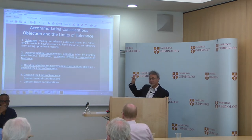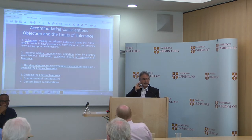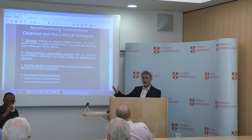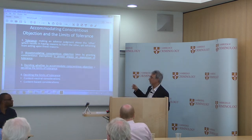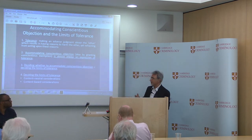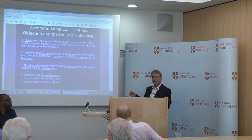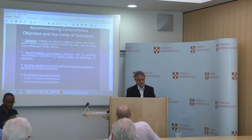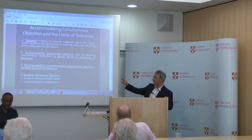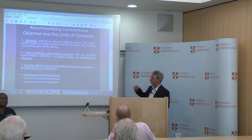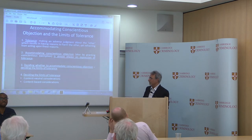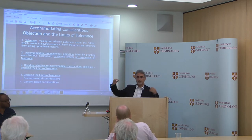But if the law does take a moral stand, then exempting objectors from the law is always an expression of tolerance, which means that when we decide whether to accommodate conscientious objection or to exempt conscientious objectors, we always make a decision about the limits of tolerance. And when we decide the limits of tolerance, we can take into consideration two types of considerations: content-neutral considerations or content-based considerations. Content-neutral considerations may include, for example, possible harm that may be caused to third parties.